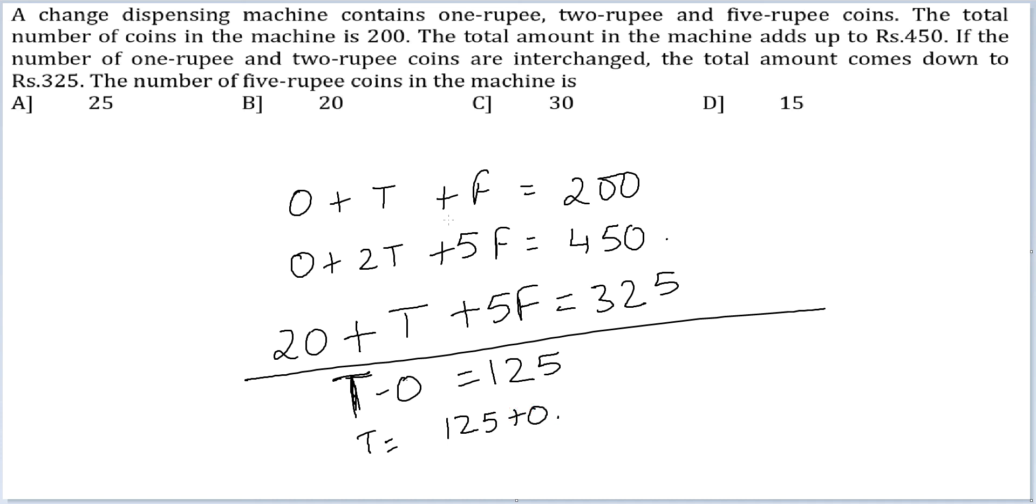So let me replace it in the first equation. I get 2O plus... So let me do O equals T minus 125.